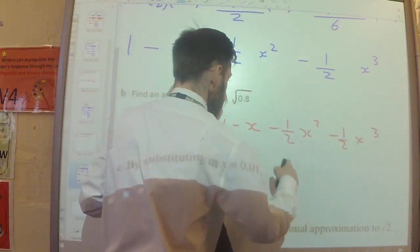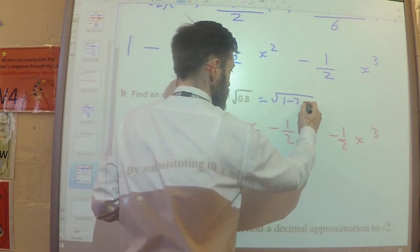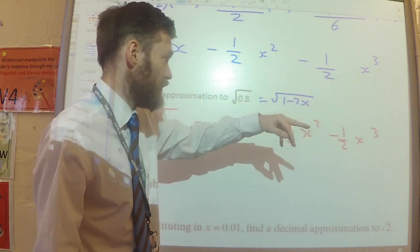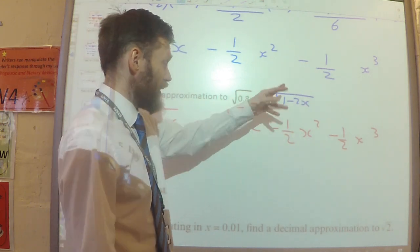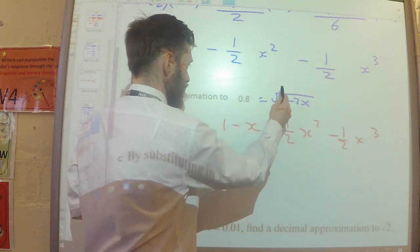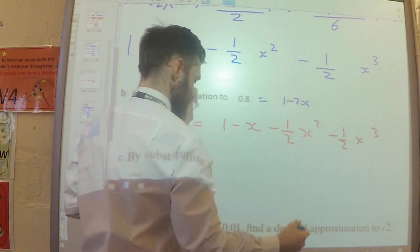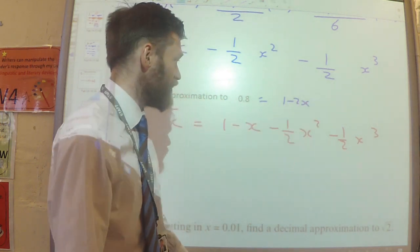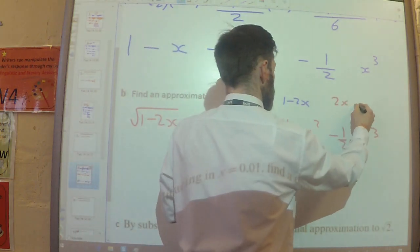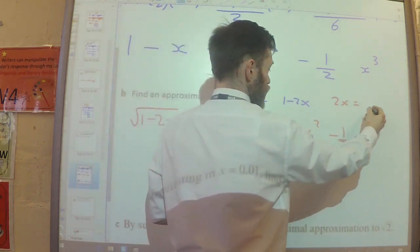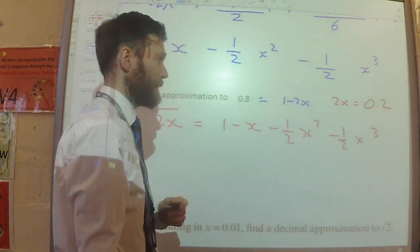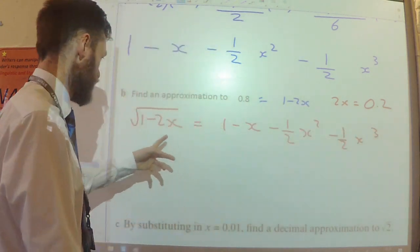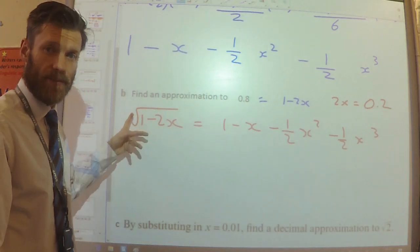If you can't spot that, let's make the square root of 1 minus 2x equal to the square root of 0.8 and just solve this equation. If I square both sides, that gets rid of the square roots. Moving terms gives 2x equals 1 take away 0.8, which is 0.2. Therefore x has to be 0.1. If x is 0.1, then this is going to be the square root of 0.8.